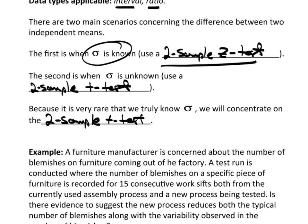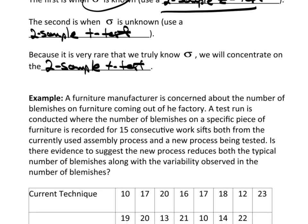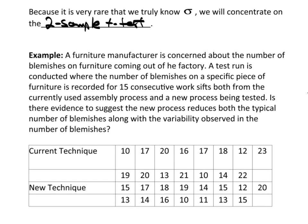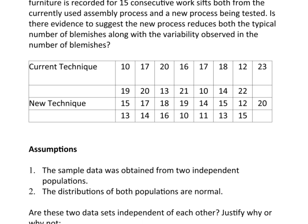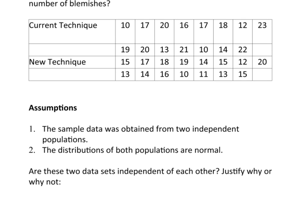We have this exact same scenario. This is the same data, everything that we just looked at. And now we're going to concentrate on the means. The assumption is that the data was obtained from two independent populations, and the distribution of both populations is normal. This is the exact same thing that we did for the f-test.